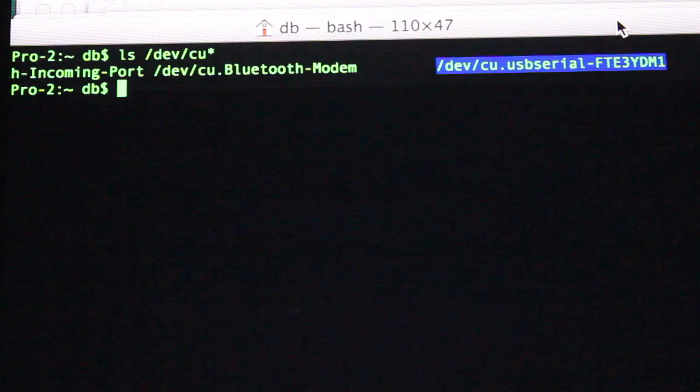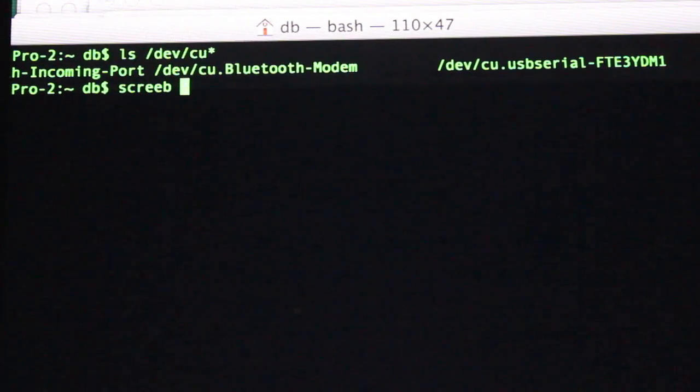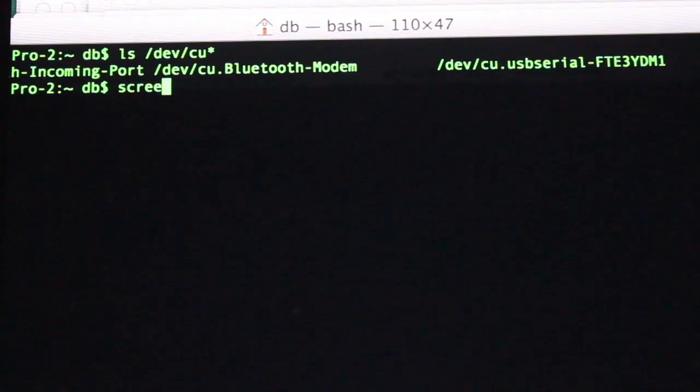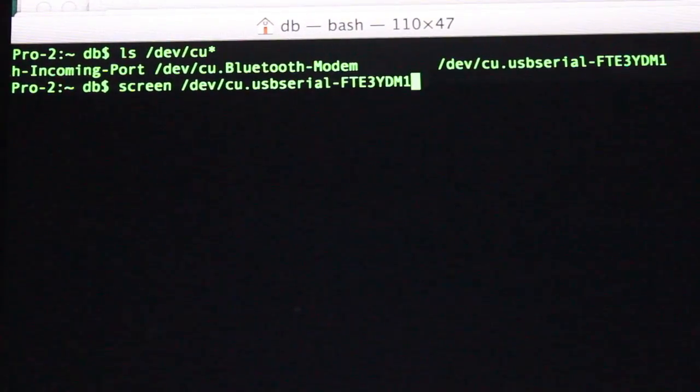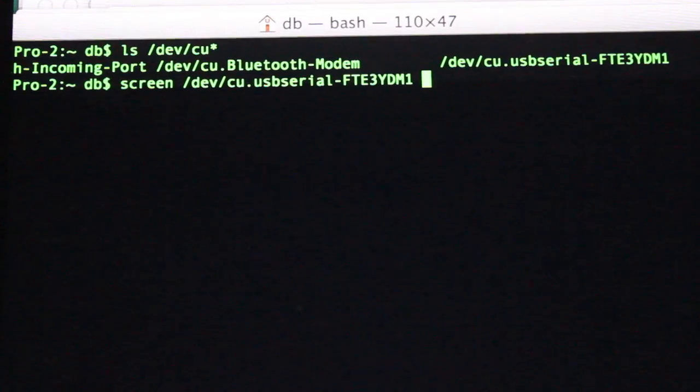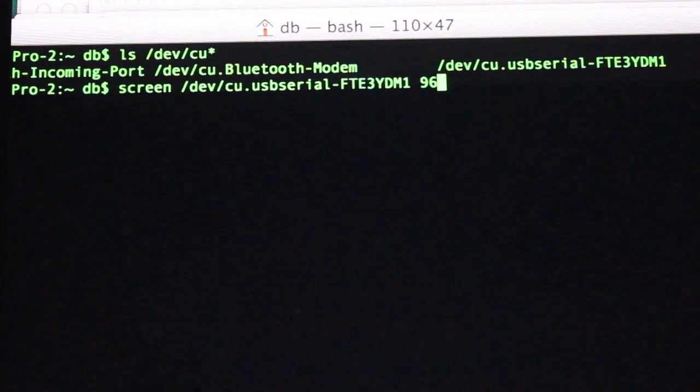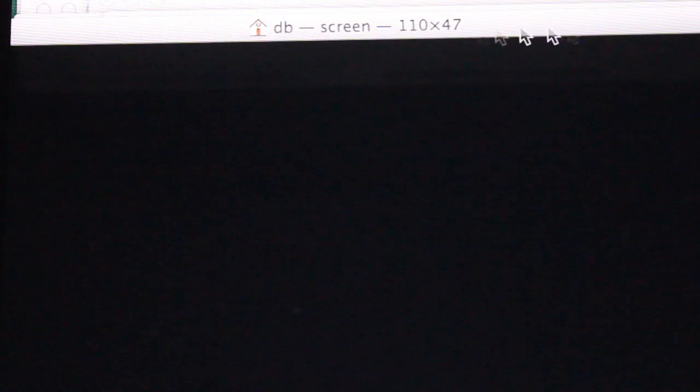So I'm going to use a command called screen. Now it's important that you also make sure that your device is not connected via Bluetooth. So just something to keep in mind when you're doing this. I'm not paired or anything like that. So screen. And then I'm going to use the default baud rate of 9,600. And now we're connected.